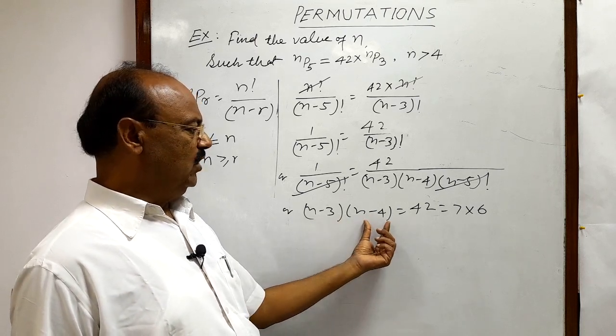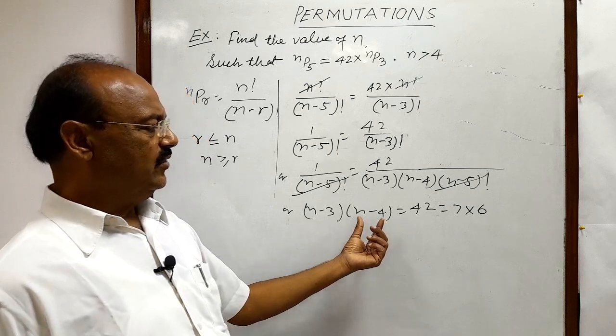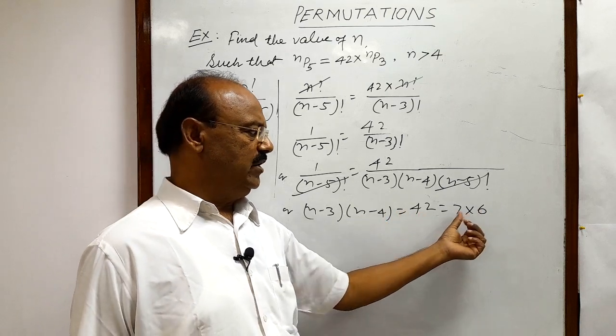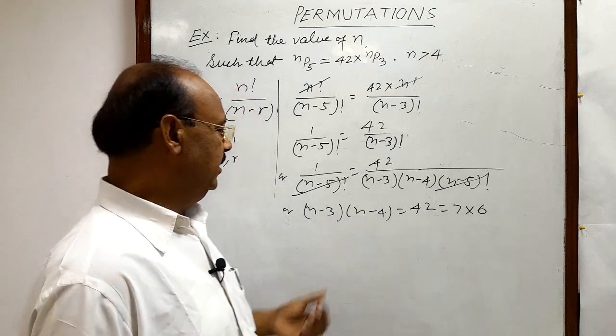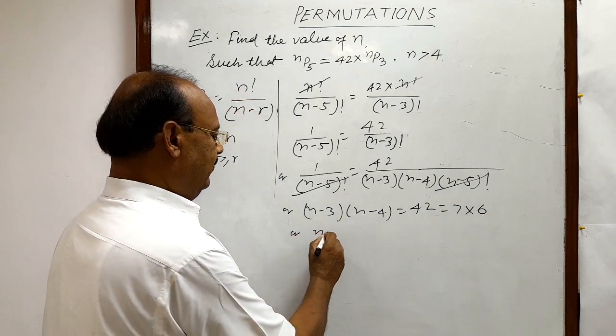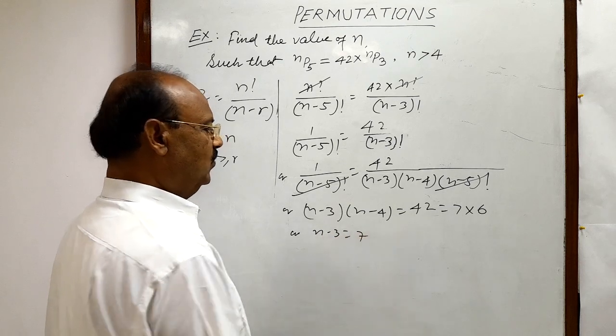This is product of two consecutive natural numbers. That is why we have written here 42 is product of two consecutive natural numbers, 7 into 6. So that we could compare it directly. And we can write N minus 3 is equal to 7.